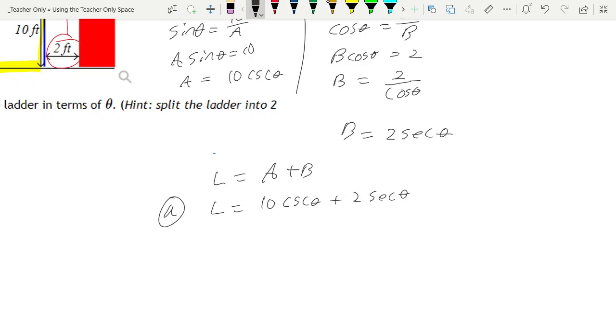Now, the next part of the problem is asking us to find the derivative of this function. Well, this is just our standard derivative rules. So we're going to say the derivative cosecant would be negative cosecant cotangent, but we maintain the argument. So it's going to be negative 10 cosecant theta cotangent theta. And then the derivative of secant would be secant theta tangent theta. Not too bad.